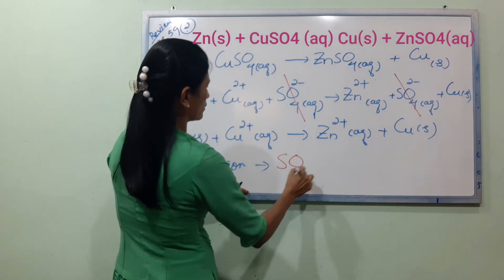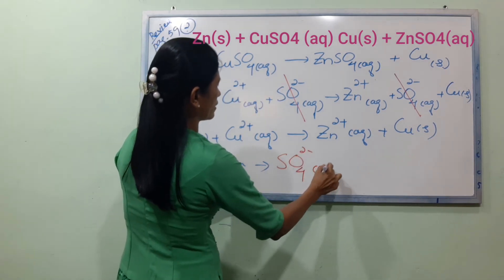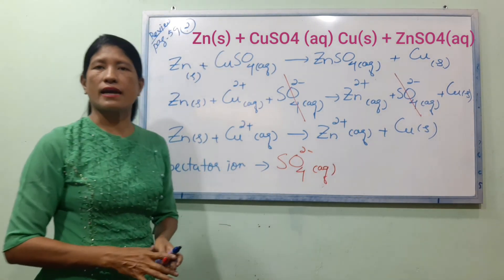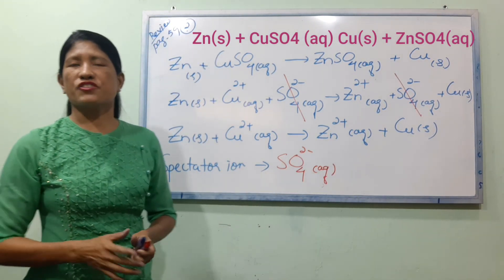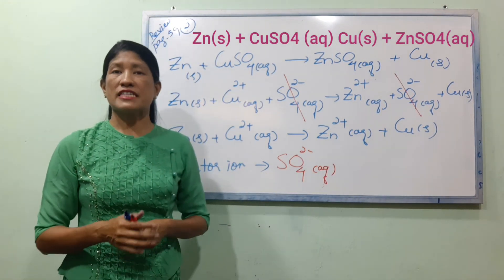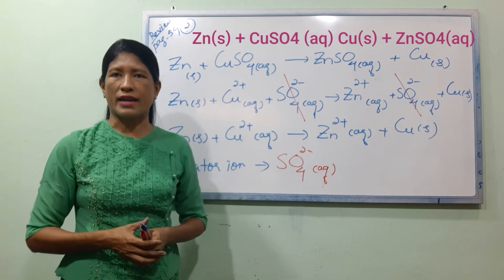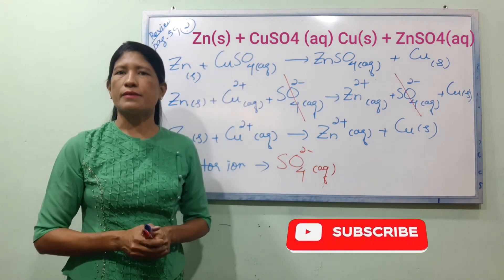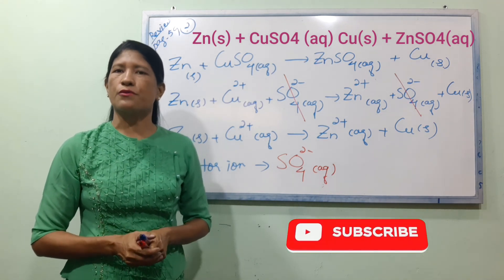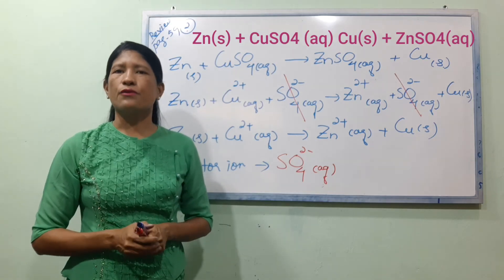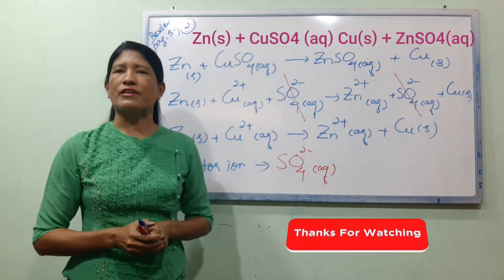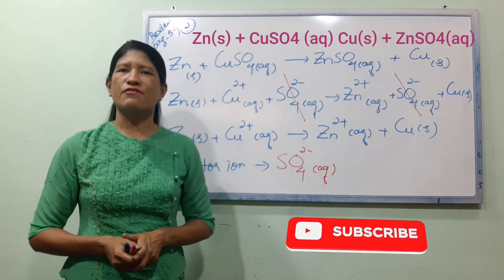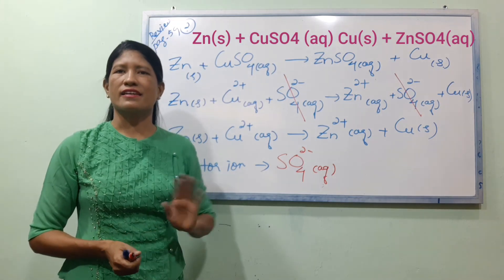SO4 2-minus aqueous. Page number 59, review question number 2. The net ionic equation. Next lessons — bye-bye.